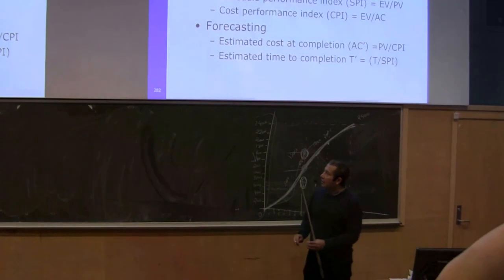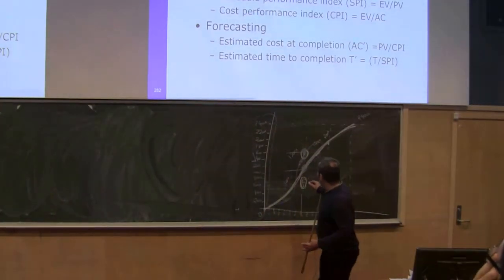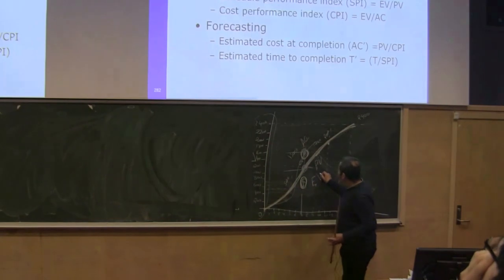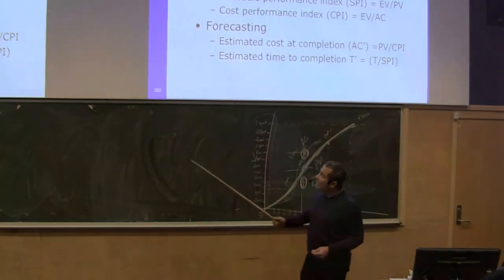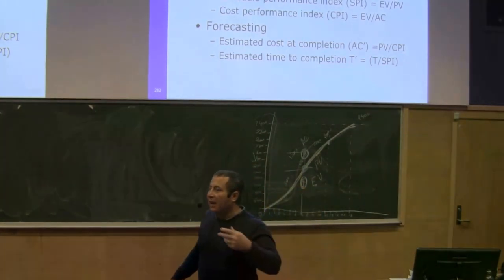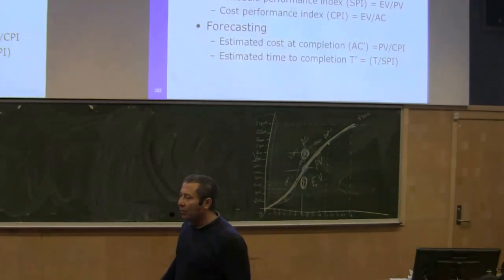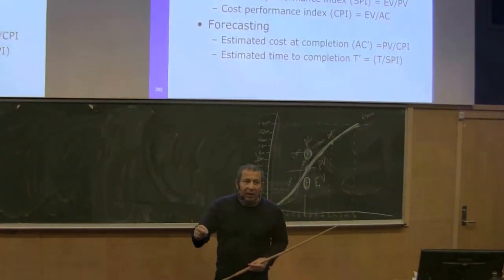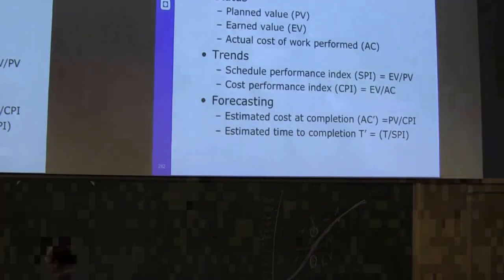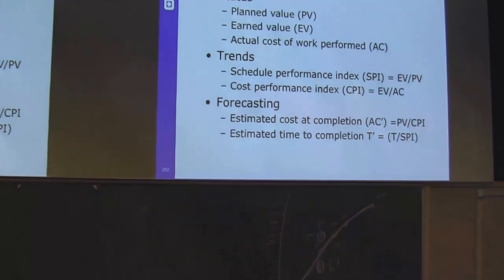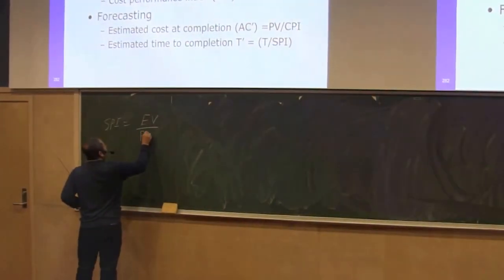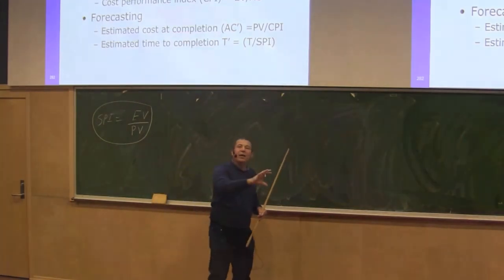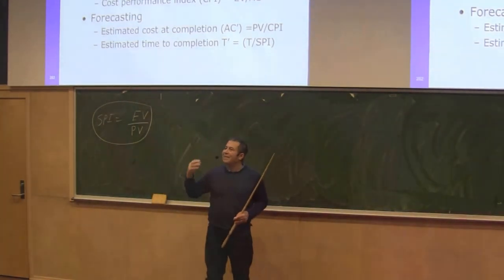When you have these three numbers — actual cost, planned value, and earned value — we define two important parameters that help us identify future trends. The first is SPI, the Schedule Performance Index, which is equal to Earned Value divided by Planned Value. This gives us an indication of where we are in terms of time — that's why it's called Schedule Performance Index.